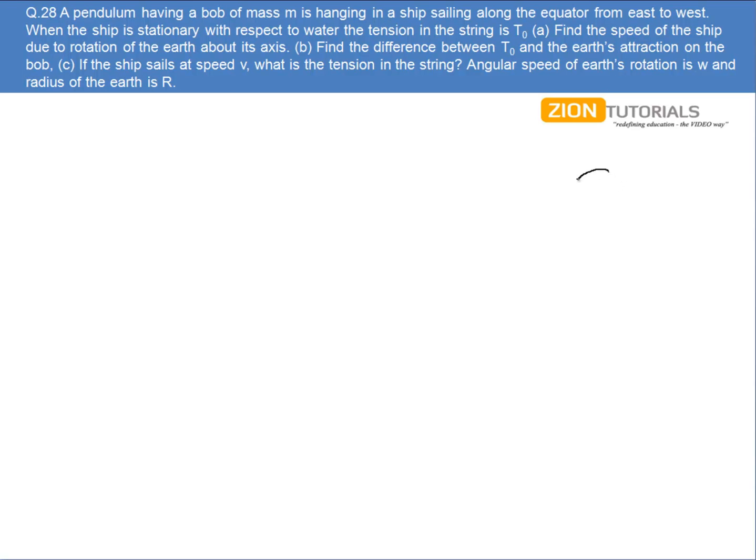Now first of all let's say this is my earth. Try to be a bit imaginary while drawing the sketch so that you can understand what actually is happening. This is my north, this is my south. Let's say this is my west and east. Okay now I'll see from here and now I'll make the diagram.